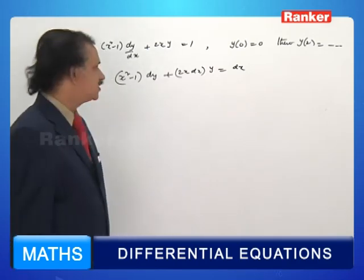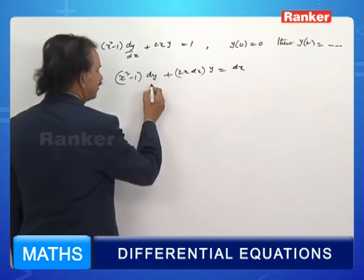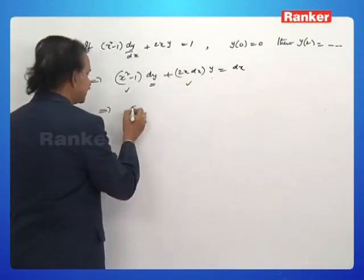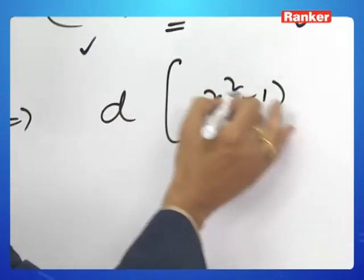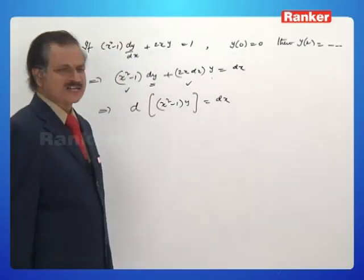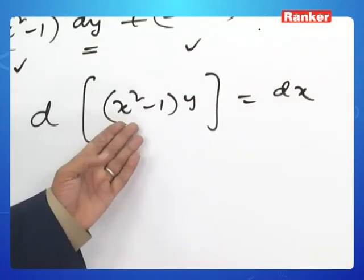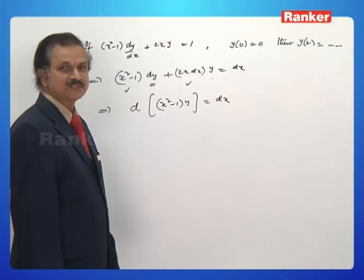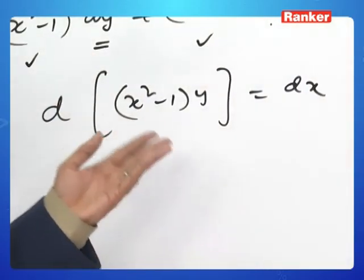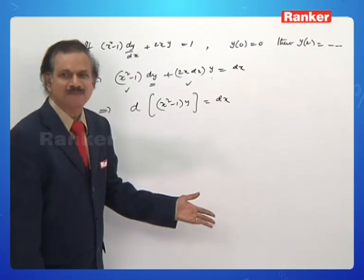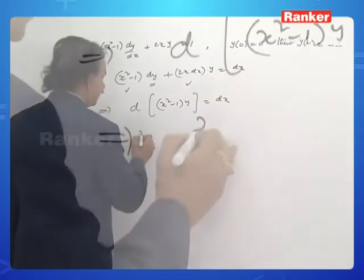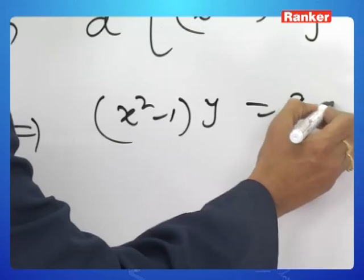The left-hand side can be recognized as d[(x²-1)·y] using the product rule (u'v + v'u model). This is an exact differential. Therefore d[(x²-1)y] equals dx. Integrating both sides gives (x²-1)·y equals x plus c.